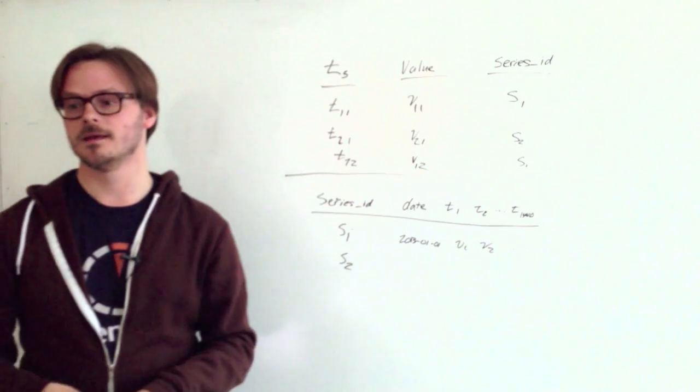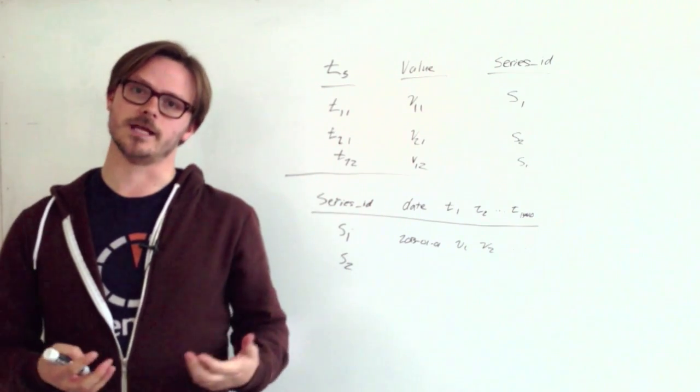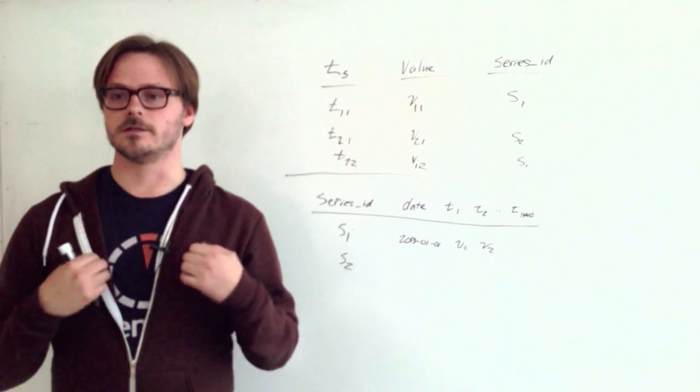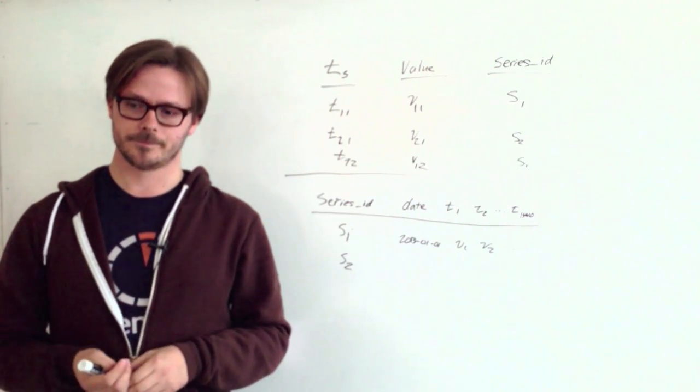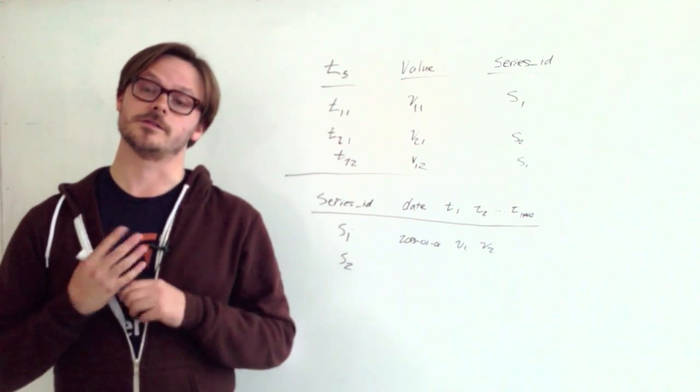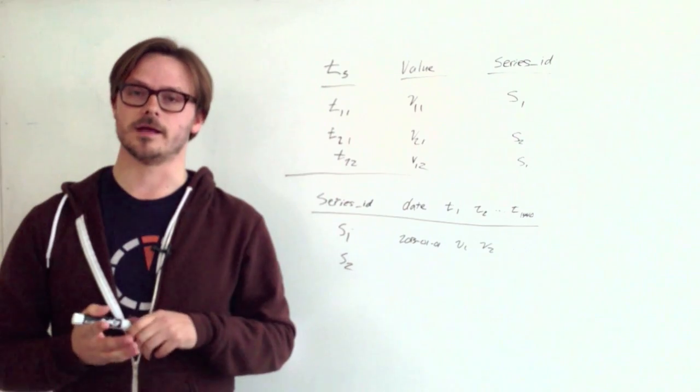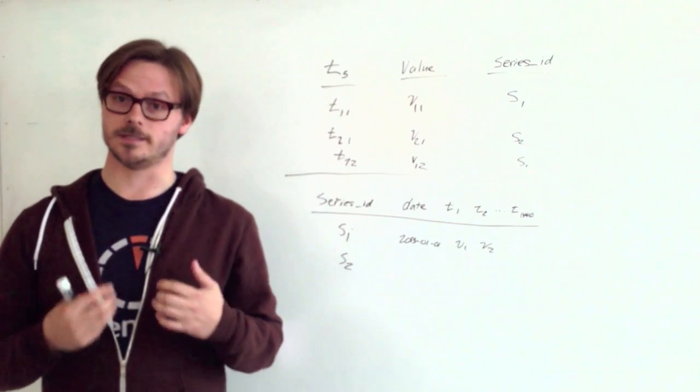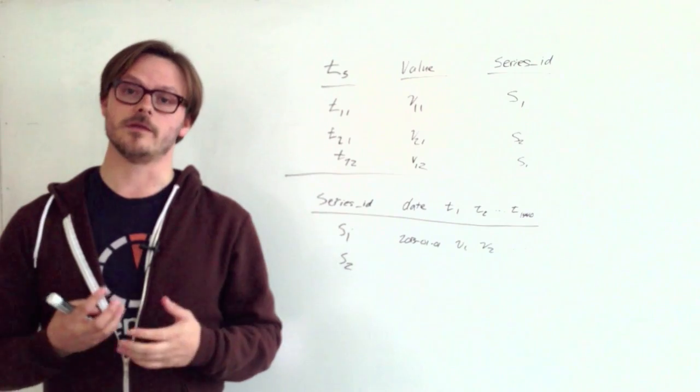So as you can see, it is possible to optimize relational database for time series data. However, a lot of the optimizations introduce complexities and challenges. By storing this data as a stream instead of a table, we can eliminate a lot of these challenges. In the next session, we'll talk about how we store time series data as a stream and the benefits of doing so.